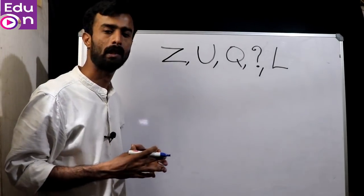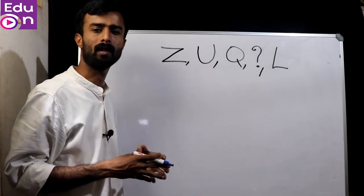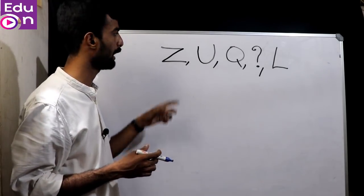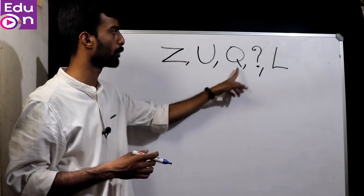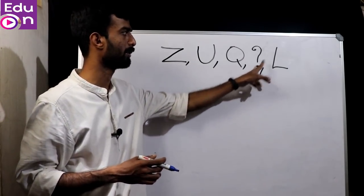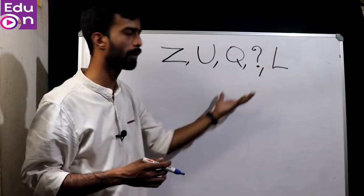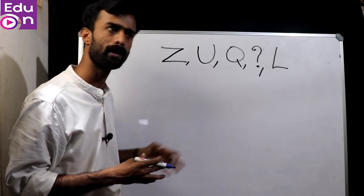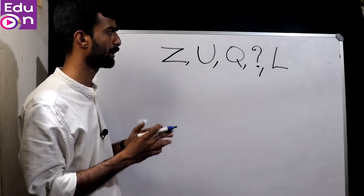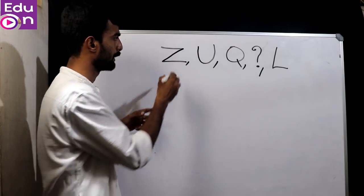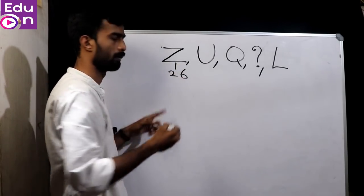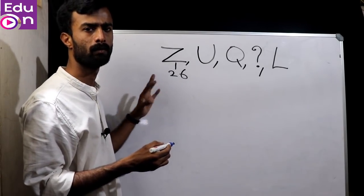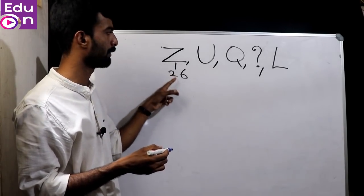The next question is mental ability — number series. If you search a number series, there is a number series. Z more — the next term is L. After the question mark, if you search a mental ability and we are making a video on this number series. Place value: a=1, b=2, c=3, z=26.